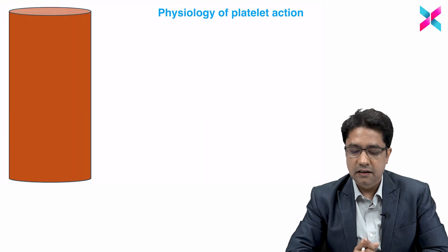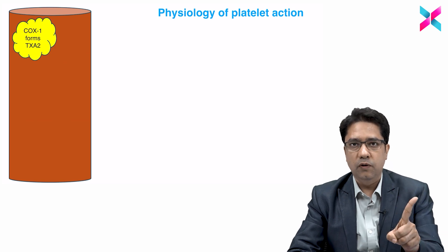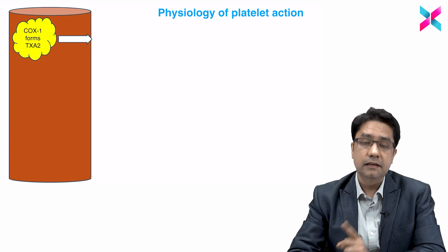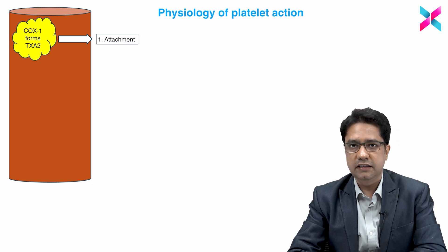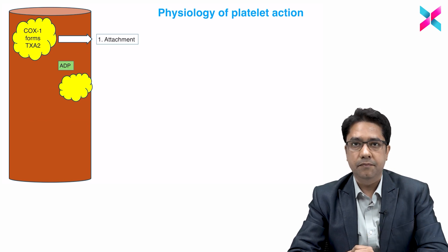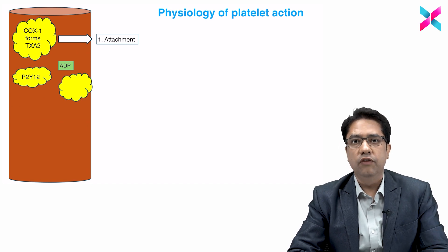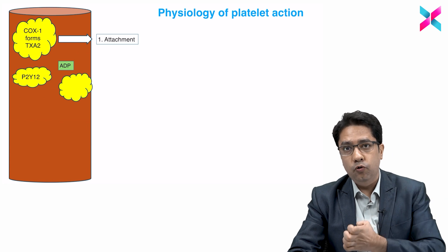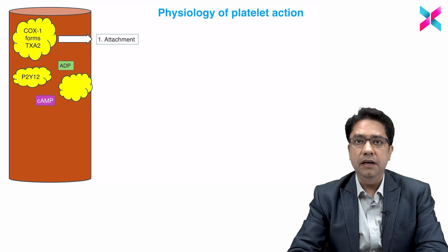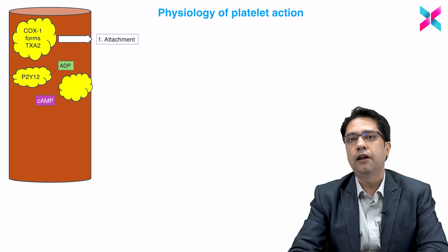Let's summarize the physiology of platelet action. The first step: the COX-1 enzyme — cyclooxygenase — produces thromboxane A2, which causes platelet attachment. When platelets are attached, they release ADP, which acts on the P2Y12 receptor on other platelets, causing platelet recruitment — calling more platelets to build the platelet wall. Opposite to ADP, we have cyclic AMP, which inhibits platelet recruitment.